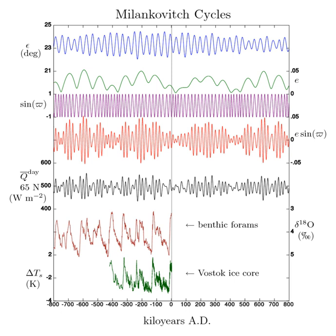Even the well-dated climate records of the last million years do not exactly match the shape of the eccentricity curve. Eccentricity has component cycles of 95,000 and 125,000 years. However, some researchers say the records do not show these peaks, but only show a single cycle of 100,000 years.